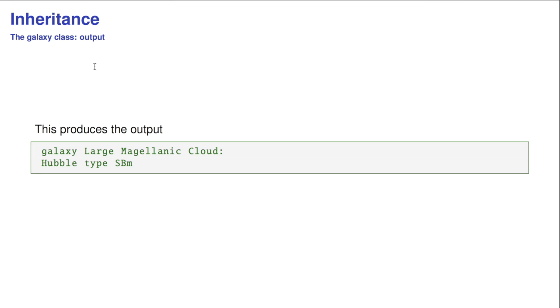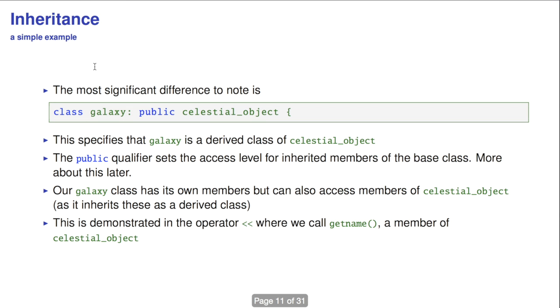If we run this, it produces some sensible output and we're quite happy and satisfied, but not completely. So, like I said, the most significant difference to note is this public celestial object after the class galaxy statement, which says that galaxy inherits celestial object, but does public inheritance. The public qualifier has the access level for inherited members of the base class. And that really needs a debate of its own, which you will get.